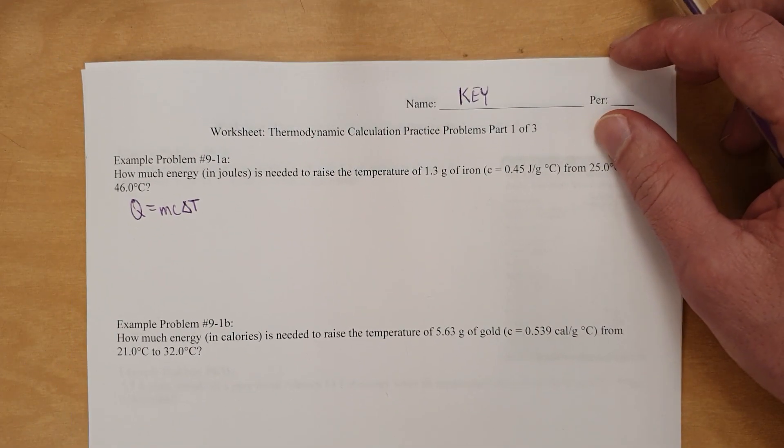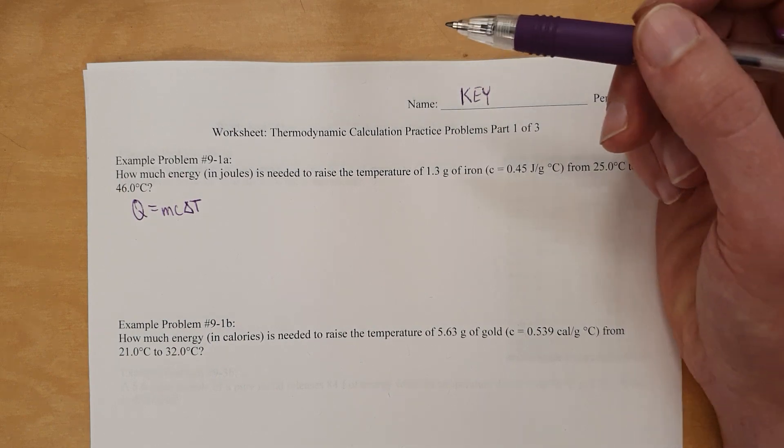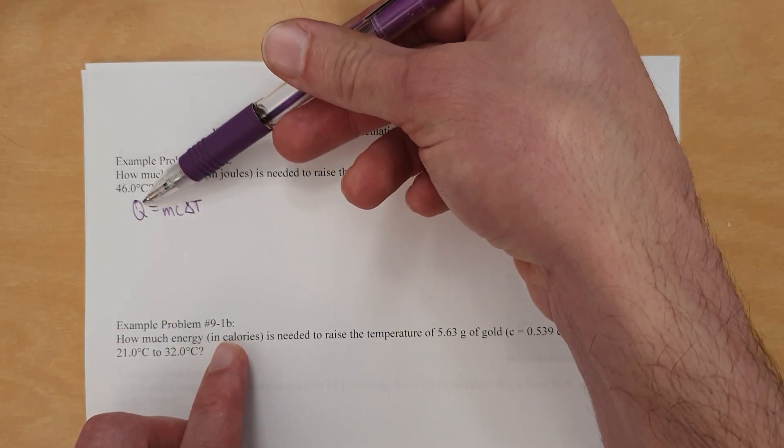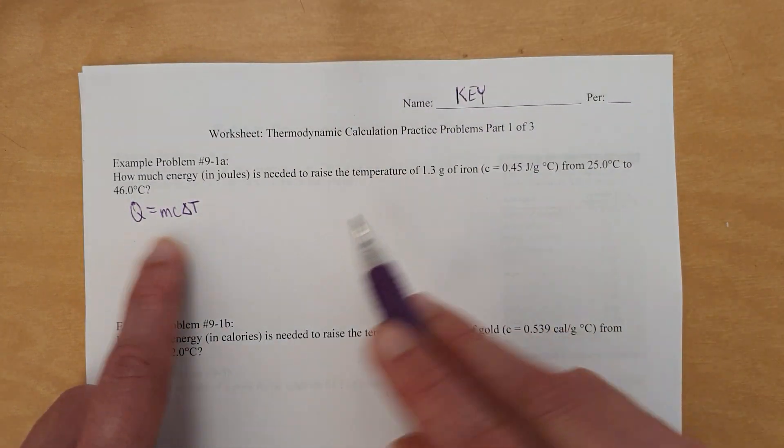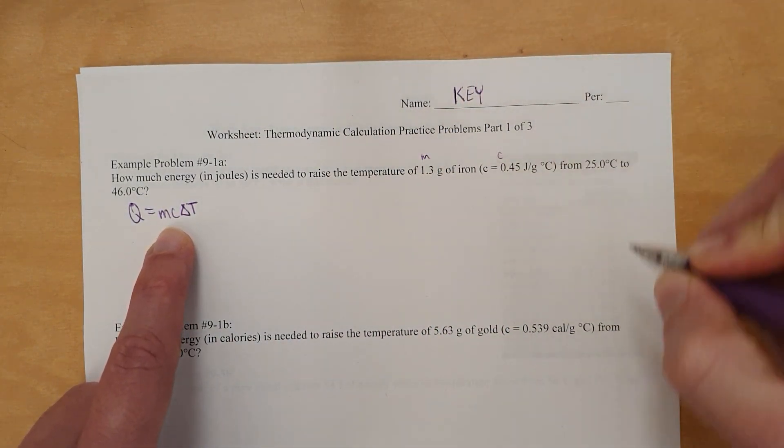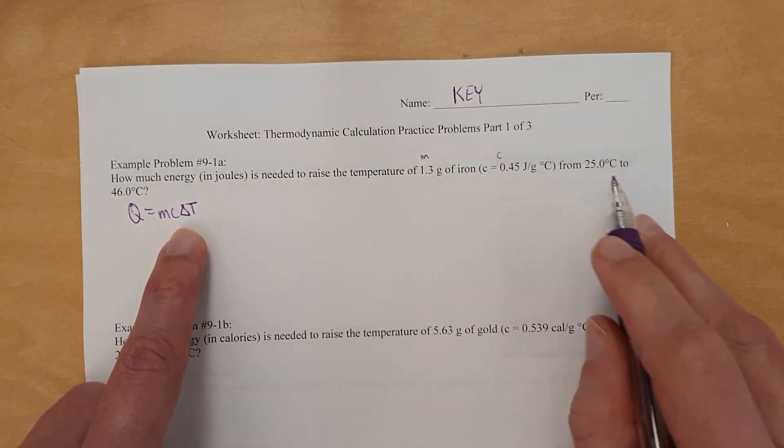So let's see, what we're going to be doing with this is going through the calculations. So it just asks how much energy, and so we're going to calculate what Q is. So we look at where's our mass, there it is, there's our mass, there's our specific heat capacity, and our delta T comes from that.